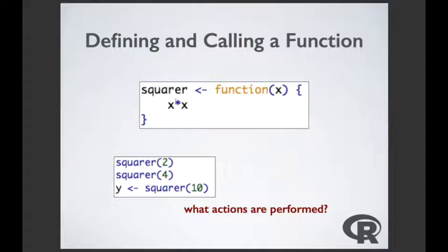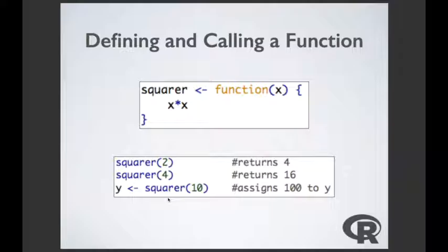Here we can see what the function returns. If I do squarer with 2, it returns 4. Squarer with 4 returns 16. Or I can assign the result of squaring 10 to y — that assigns the value 100 to a new object called y, a numeric vector of length 1 with value 100.